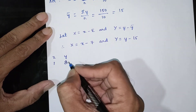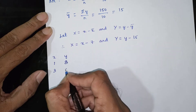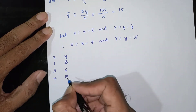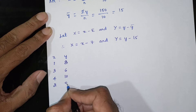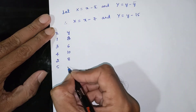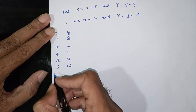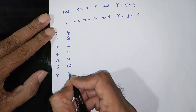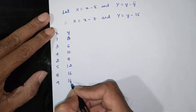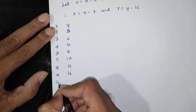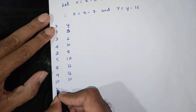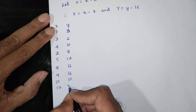The data pairs (x, y) are: (1, 8), (3, 6), (4, 10), (2, 8), (5, 12), (8, 16), (9, 16), (10, 10), (13, 32).